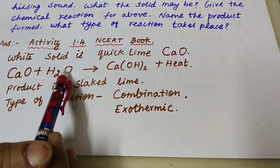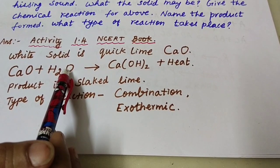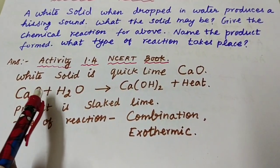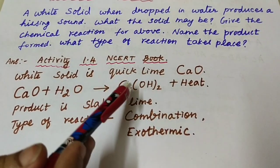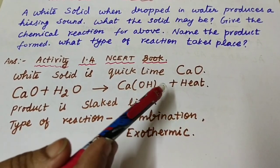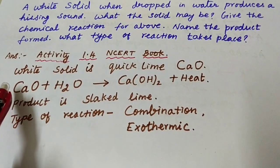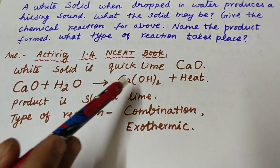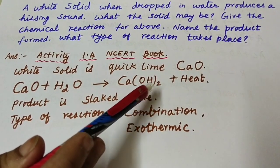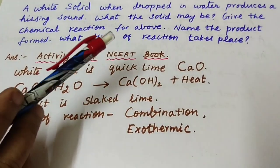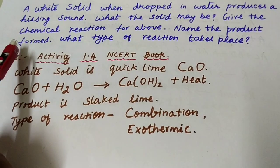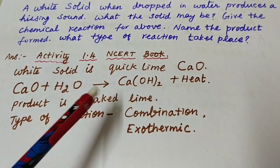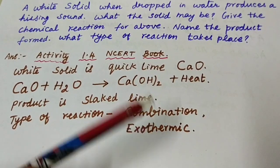The chemical reaction for the above: CaO + H₂O → Ca(OH)₂ + heat. The product formed is Ca(OH)₂, and the name of the product is slaked lime.